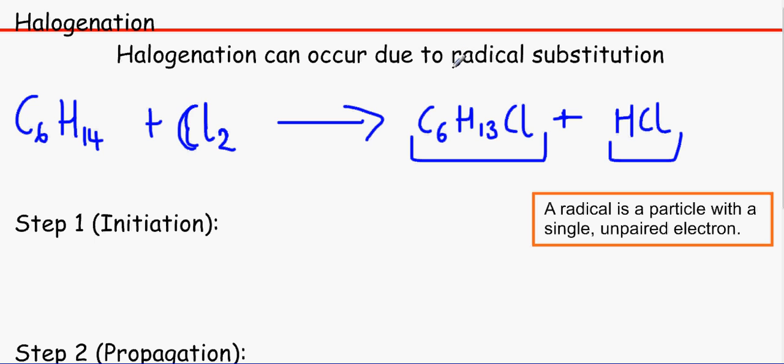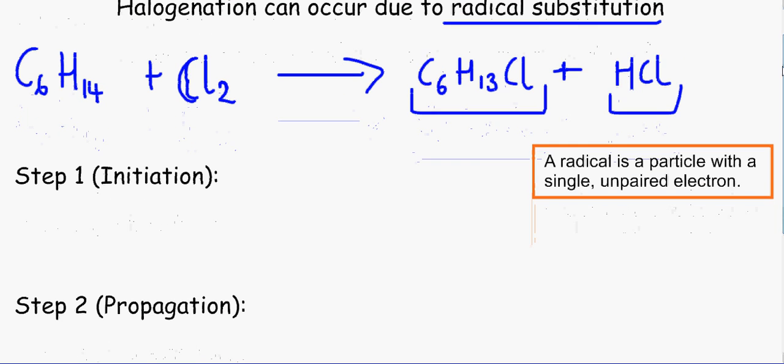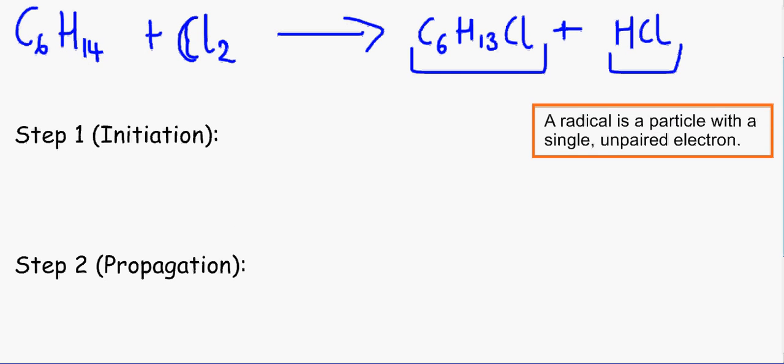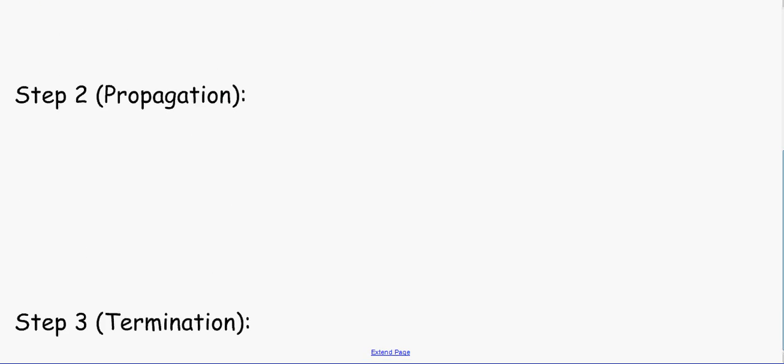This is due to radical substitution. There are a series of steps that happen because we can't just bang in C6H14 and Cl2 and magically make that. There are three steps: initiation, propagation, and termination.